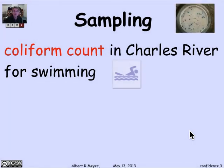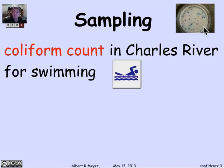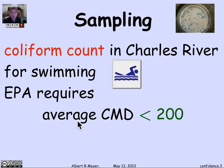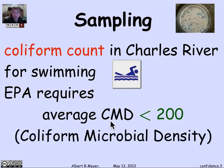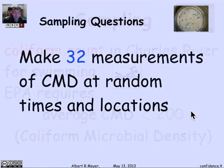Let's do the example. I want to think about the possibility of swimming in the Charles River. The Charles has a coliform count — coliform are undesirable bacteria associated with fecal matter. We want to know whether it's safe to swim in the Charles. That's a Petri dish showing a sample of bacteria that you might culture to see what's going on. The Environmental Protection Agency requires that the average CMD, the coliform microbial density, on the dish is less than 200.